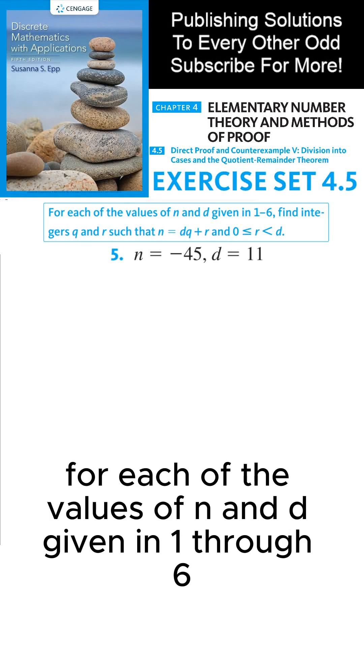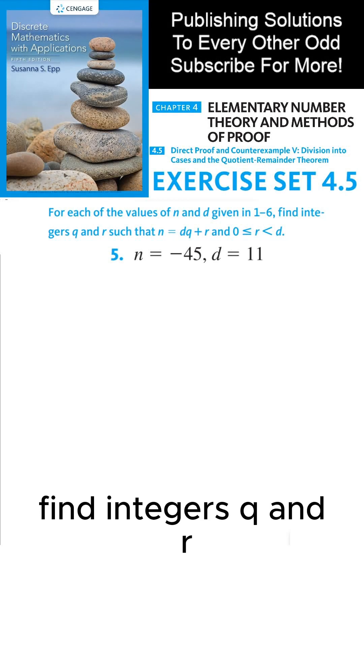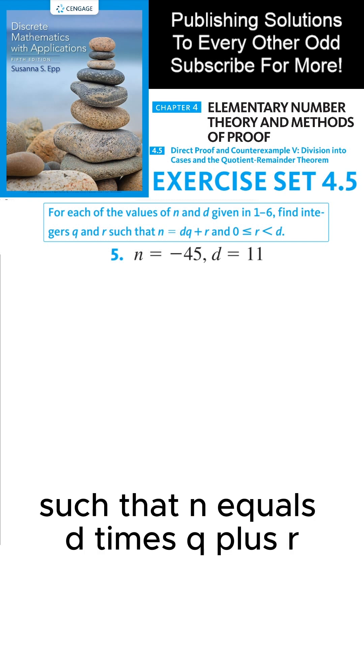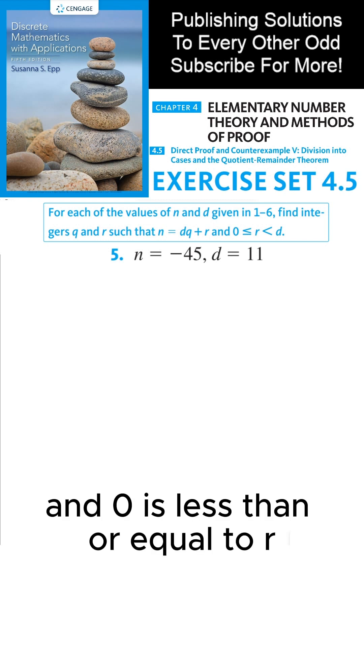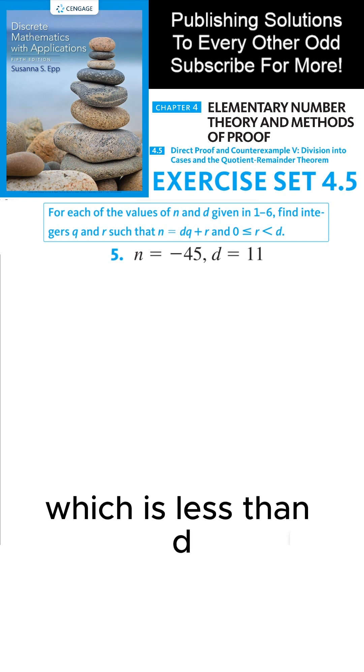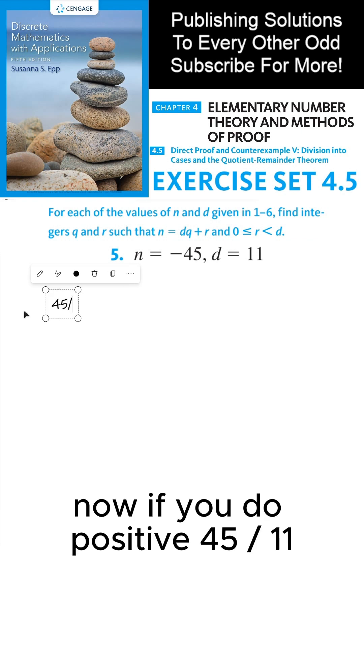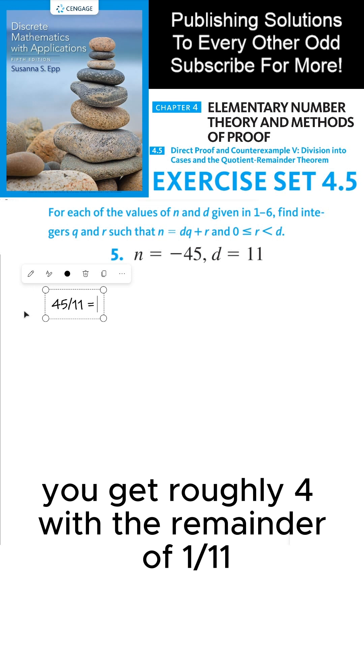For each of the values of n and d given in one through six, find integers q and r such that n equals d times q plus r, and zero is less than or equal to r which is less than d. If you do positive 45 divided by 11, you get roughly four with the remainder of one. Similarly, negative 45 divided by 11 is negative 4.0909 repeating.